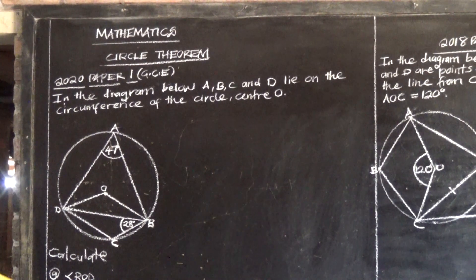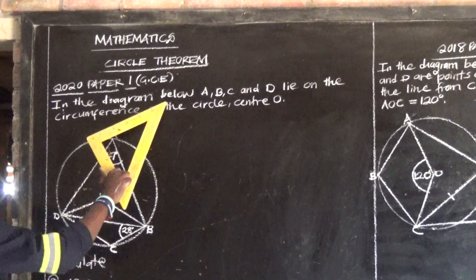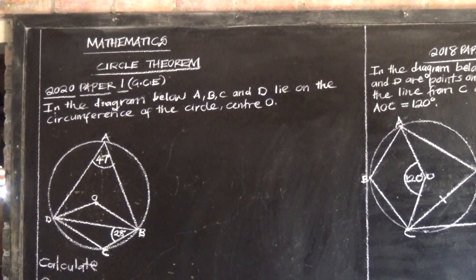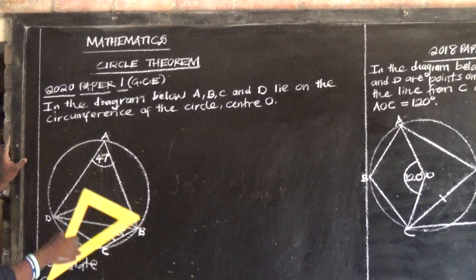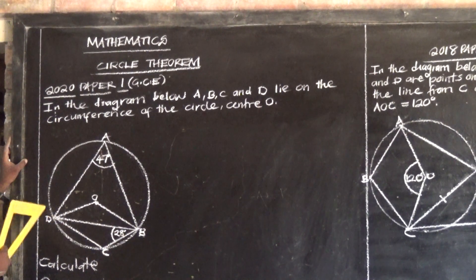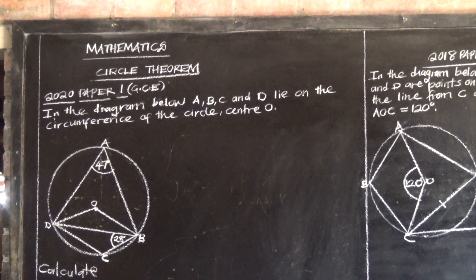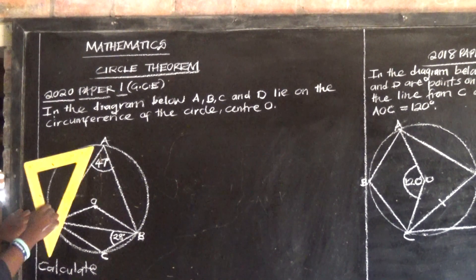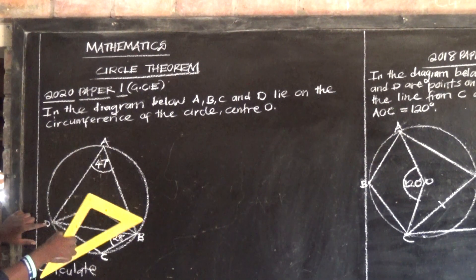Let us look at 2020 Paper 1, which is GCE. In the diagram below, A, B, C, and D lie on the circumference of the circle with center O. So the center of the circle is O, and we have other points A, B, C, D which are on the circumference. These four points form what we call a cyclic quadrilateral.